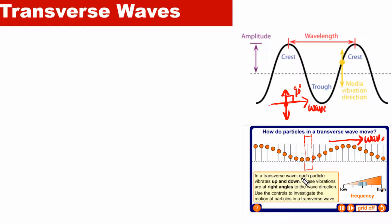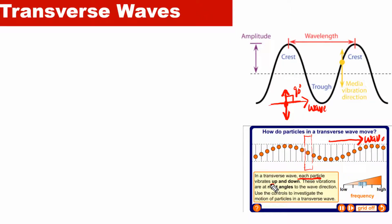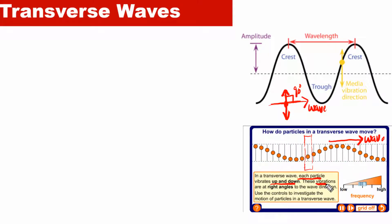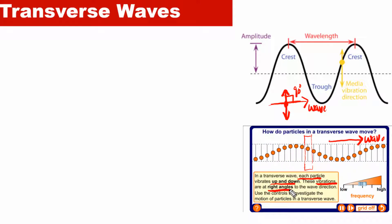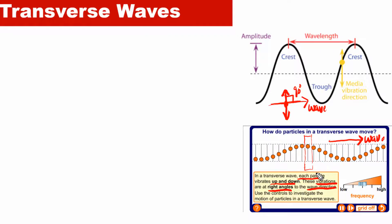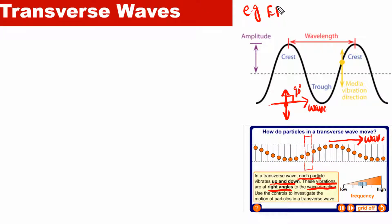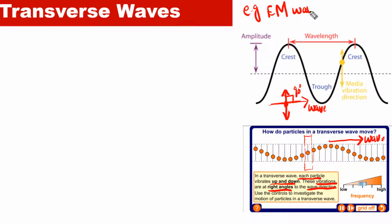In a transverse wave, each particle vibrates up and down, and these vibrations of the medium particles are at right angles to the wave direction. Examples of transverse waves include electromagnetic waves — all EM waves are transverse waves.